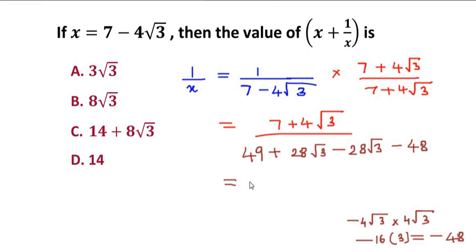Now let us further simplify this and we get it as 7 plus 4 radical 3 divided by, now plus 28 radical 3 and minus 28 radical 3 cancel out each other because the terms are same but the signs are different, and we are left with 49 minus 48 which gives us 1. So 1 over x value we got it as 7 plus 4 radical 3.